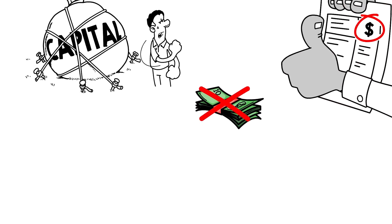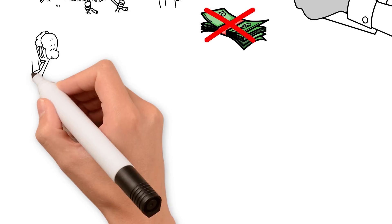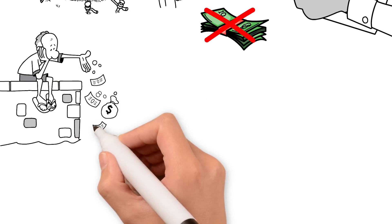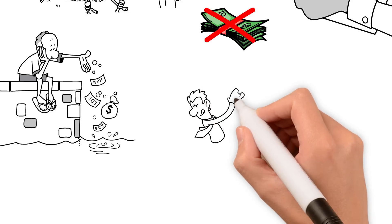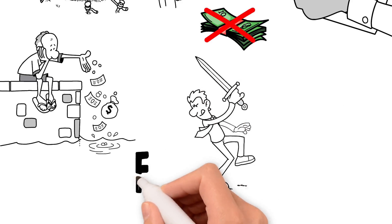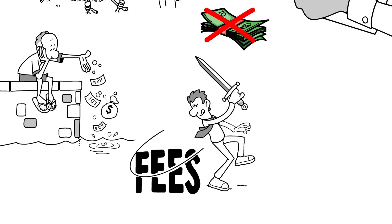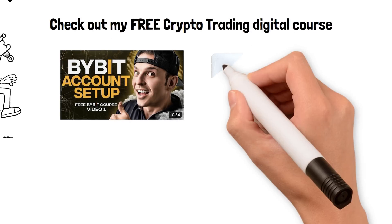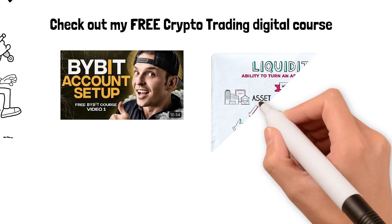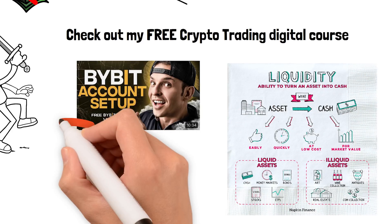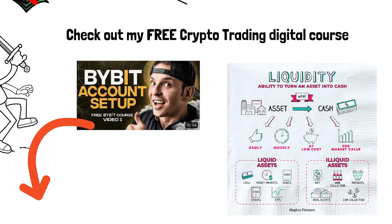If a DEX ends up running out of liquidity for one asset, it creates a very bad user experience for everyone. Therefore, when a DEX launches, they offer high staking rewards to incentivize new users to come over and stake on their DEX. That's the simplest definition of liquidity — I have an entire video that explains crypto liquidity in more depth, linked in the description.